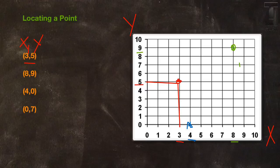And for (0, 7), since there's a 0 in the x place, we don't actually have to move along the x-axis. We just stay at 0 and move up to 7. So this would be point (0, 7).